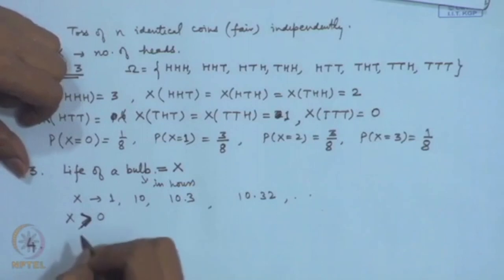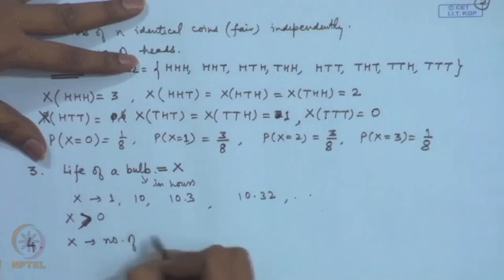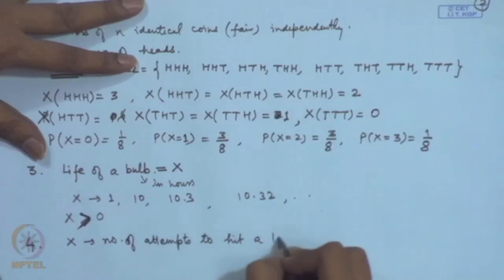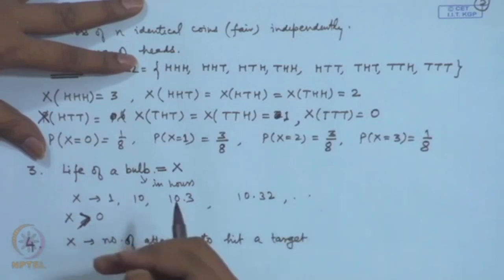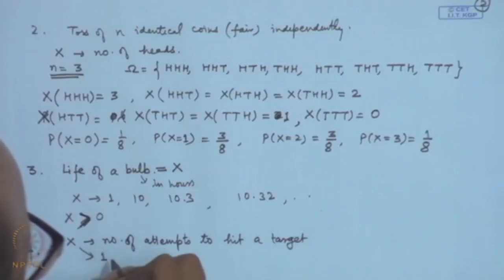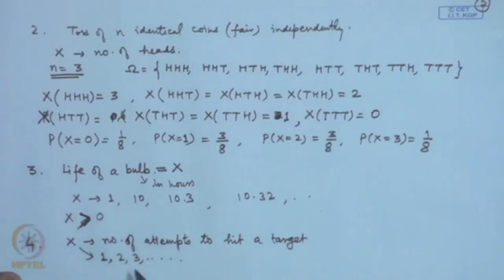There is also another case: consider X as the number of attempts to hit a target. On the first attempt you may hit, or the second, or third, and so on. X can take values 1, 2, 3, and so on — these are countably infinite values. Now we distinguish between discrete and continuous random variables.